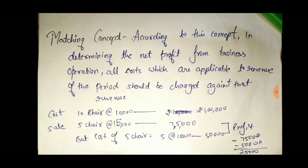So tell me — do you have a profit or a loss? You sold 5 chairs at 15,000 each, earning 75,000 rupees. The cost of those 5 chairs is 5 into 10,000, which is 50,000 rupees. So when you compare, you always match the revenue earned with the cost of the same units sold. If you sold 5 chairs, you compare with the cost of 5 chairs only.